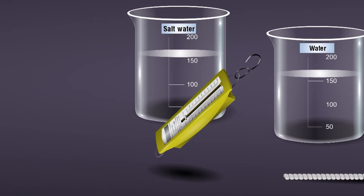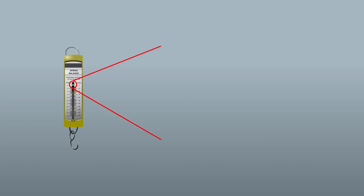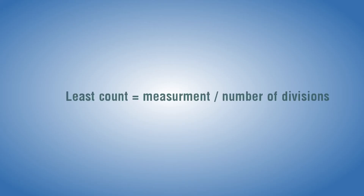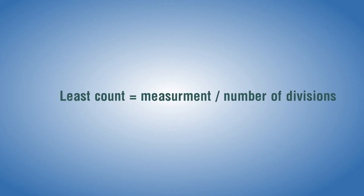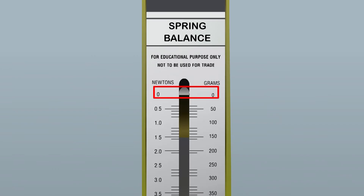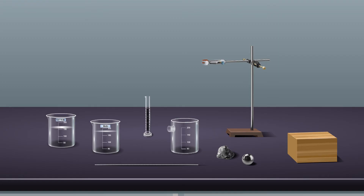Find the least count of the spring balance. The least count can be found by the equation: least count equals measurement divided by number of divisions. Hold the spring balance vertically. If the spring balance does not have graduation marks in terms of Newton, multiply mass with acceleration due to gravity at that place. Ensure the pointer of the spring balance is at zero mark.